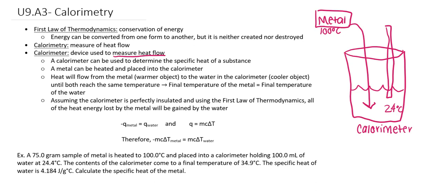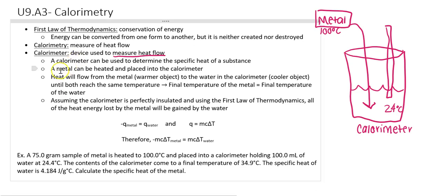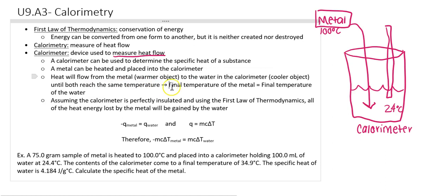The metal is going to be heated and placed into our calorimeter. Heat always flows from the warmer object to the cooler object, so heat will flow from the hot metal to the room temperature water. Heat continues to flow until both objects reach the same temperature. That tells us that the final temperature of the metal must be equal to the final temperature of the water.